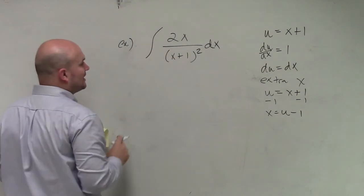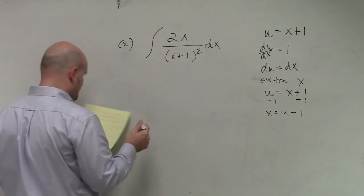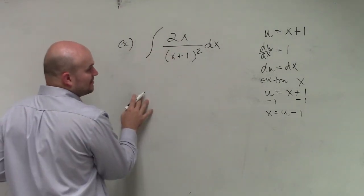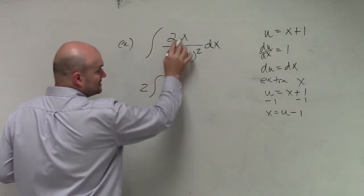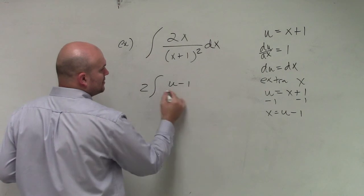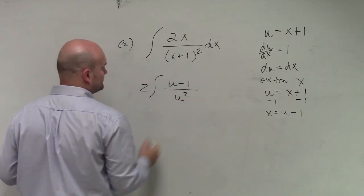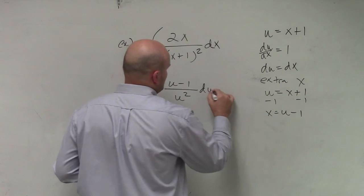Now, as far as this 2, what I can do is I can take this out, the 2. And then I can replace my x's and my u with u. So therefore, I have 2 integrate. x is equal to u minus 1 all over u squared du.